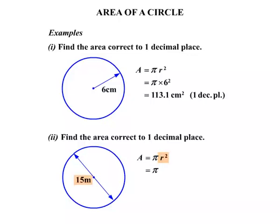Now look at our diagram. That 15 meters is obviously not the radius. That's double the radius—that's the diameter. So we need to take half of that, which is 7.5. So the radius is 7.5 meters.